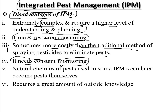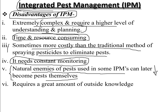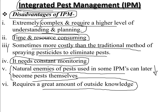IPM also needs constant monitoring to check pest growth and reduce it in a timely manner. Another disadvantage is that natural enemies of pests used in IPM can later become pests themselves — mutations can occur in predators, and those used for pest reduction can later become an even bigger threat. It also requires a great amount of outside knowledge, learning, and experimentation.